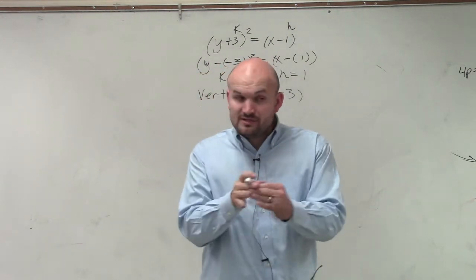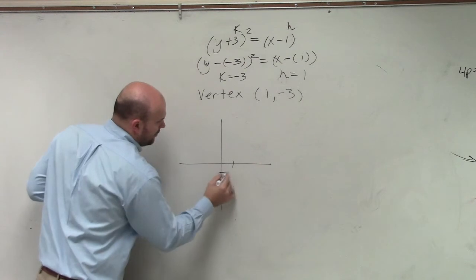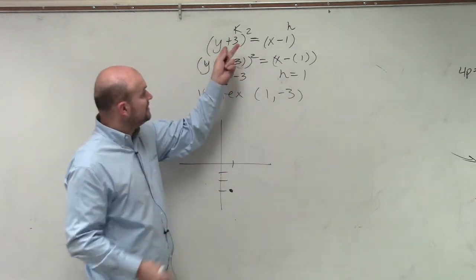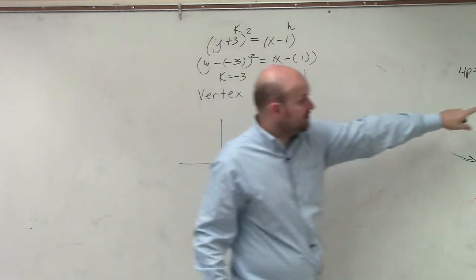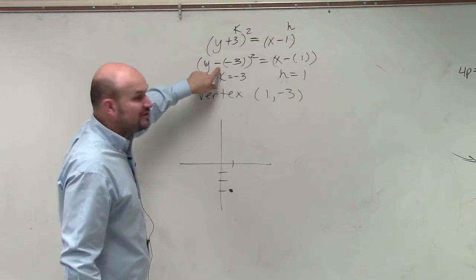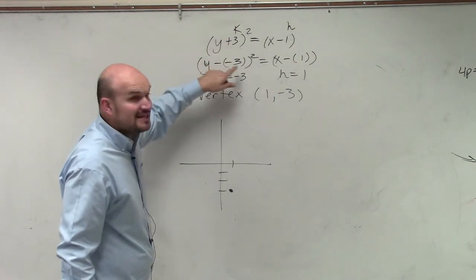Now, once we figure out our vertex, we want to graph it. One, two, three, because it's y minus k. Look at the formula. It's y minus k. Well, this isn't written as minus k, is it? But you can rewrite a plus as y minus k.